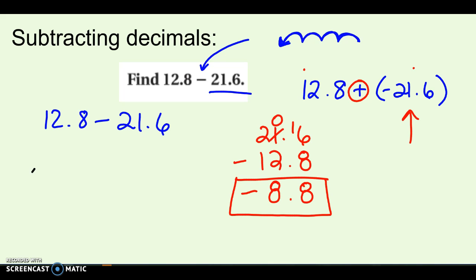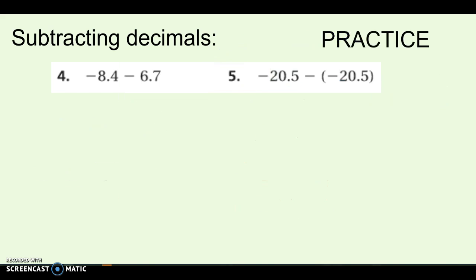If I want to think about that on a number line, just to double check my answer, make sure it makes sense, I'm starting at, let's put 0 here, I'm starting at 12.8, so maybe here's 10, here's 12.8, and taking 21.6 away, I'm hopping this way, 21.6, and I would end up at negative 8.8. So we know our answer makes sense, let's go on to the practice.